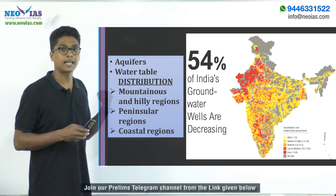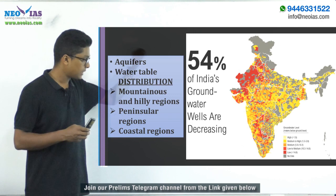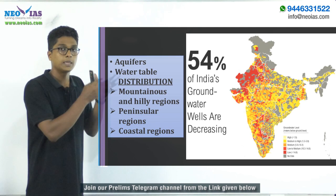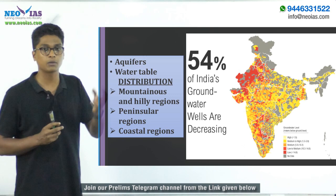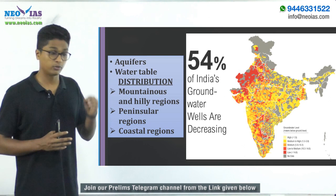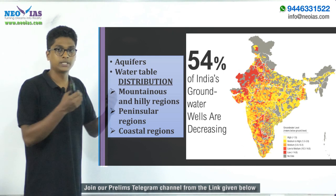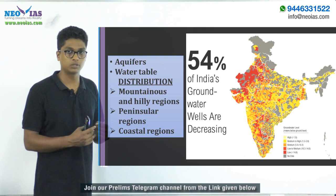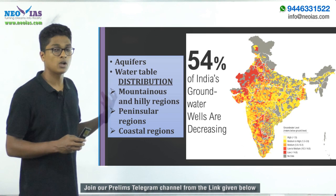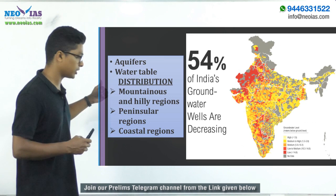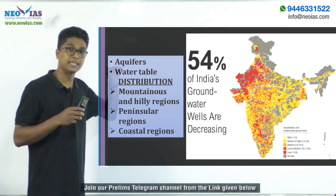The peninsular region has a different geology from the Himalayan ranges or the plains, because the peninsula was formed much earlier in geological time. As a result, the peninsular plateau is made up of hard igneous or metamorphic rock, which doesn't allow water to seep underground. So groundwater in the peninsular region is not extensive and won't be connected over large areas, though there are certain sub-regions with more groundwater even within the peninsula.